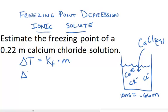So, when I calculate the freezing point depression, I use the constant from the table, which is 1.86 degrees Celsius kilogram per mole, and I multiply that by the molal concentration,